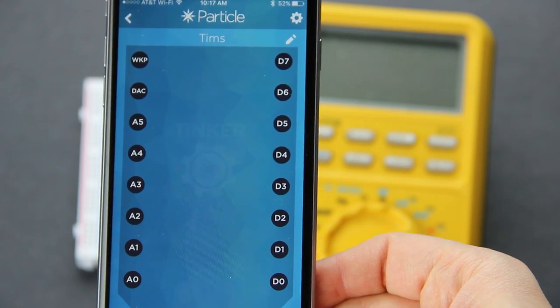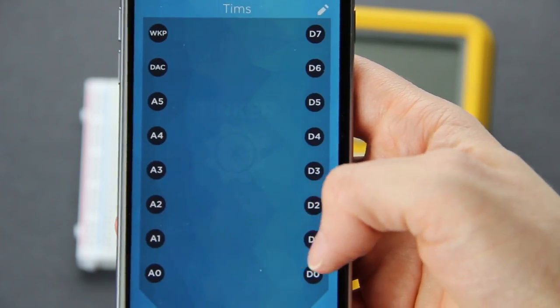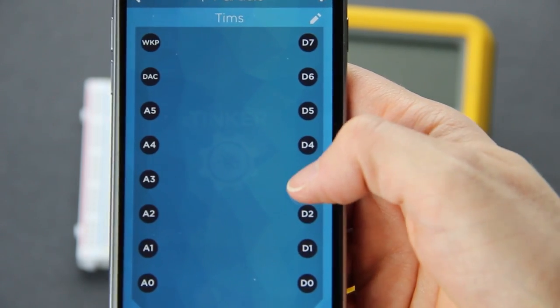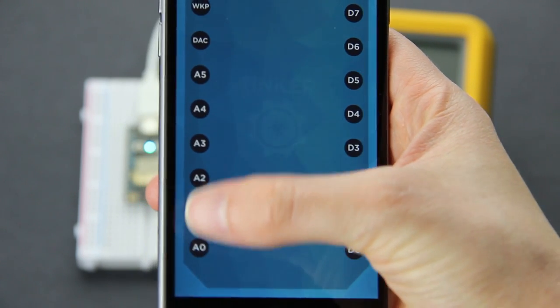The pin layout on my phone matches that of the Photon. If we tap on any of these pins, we are going to have a few options. All of the pins are able to read and write digital signals, and instead of using an on or an off, a one or a zero, we are going to use a high or a low.